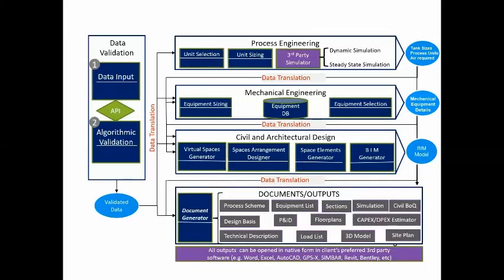And we then take that data, and through our document generator module, we generate all the engineering documents that you need. So everything from a process flow diagram to a PNID to all the civil and architectural documents to the OPEX calculation for the plant is generated based on the data that came out of the previous steps that I mentioned.